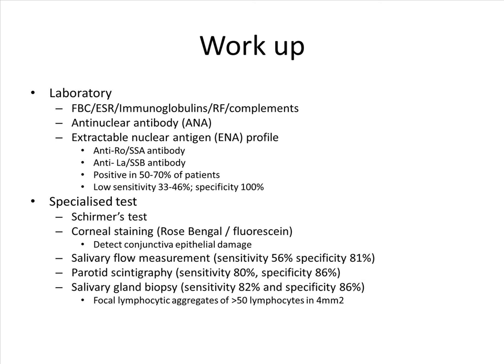There are other specialized tests such as the Schirmer's test, which measures the amount of tear produced in five minutes per tear strip. Other tests such as corneal staining using rose bengal or fluorescein help detect the amount of conjunctival epithelial damage in patients with Sjogren's syndrome. One can also perform a salivary gland biopsy to confirm the diagnosis. If there is inflammation, one can see focal lymphocytic infiltrates of more than 50 lymphocytes in a 4 mm square.